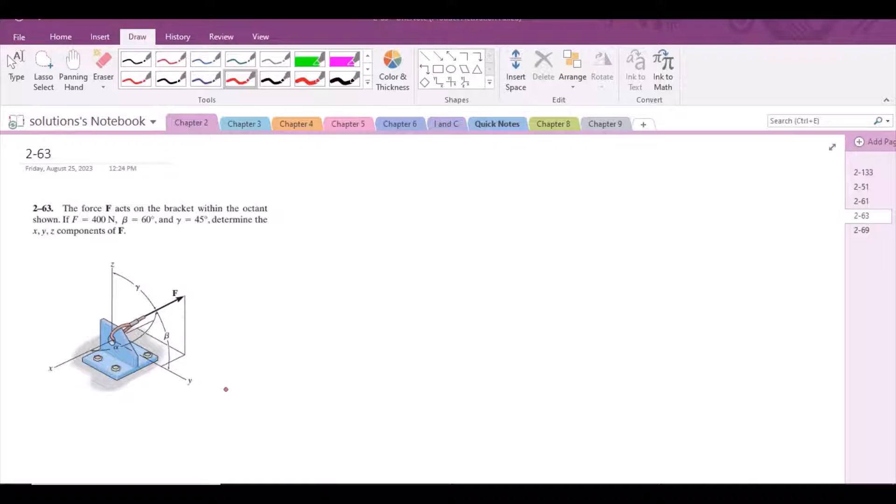According to this problem, the force F acts on the bracket within the octant shown. If F is 400 N, beta is 60 degrees, and gamma is 45 degrees, determine the x, y, z components of force.